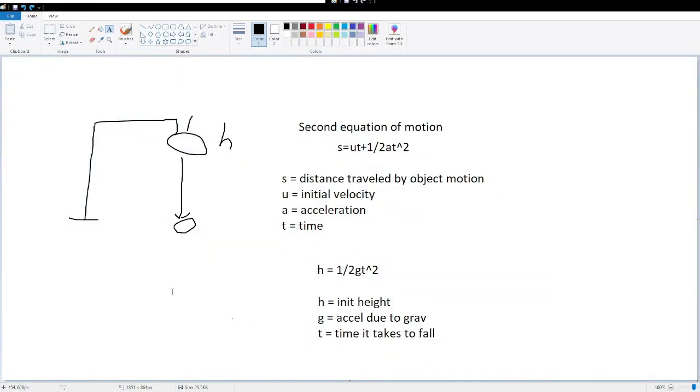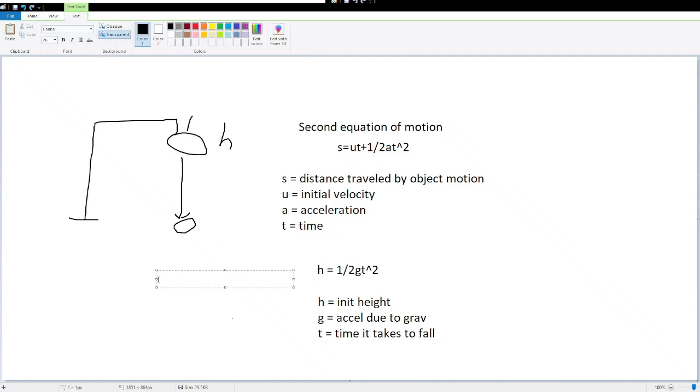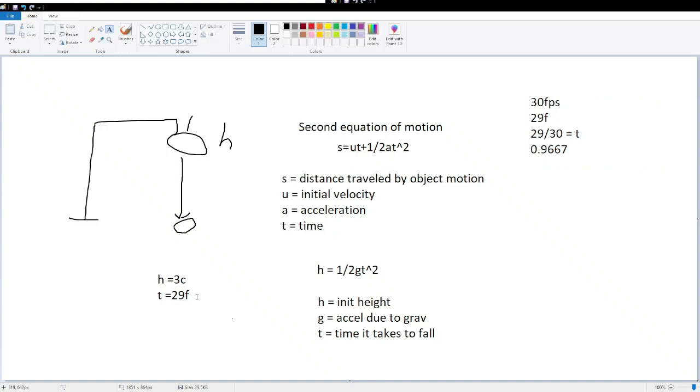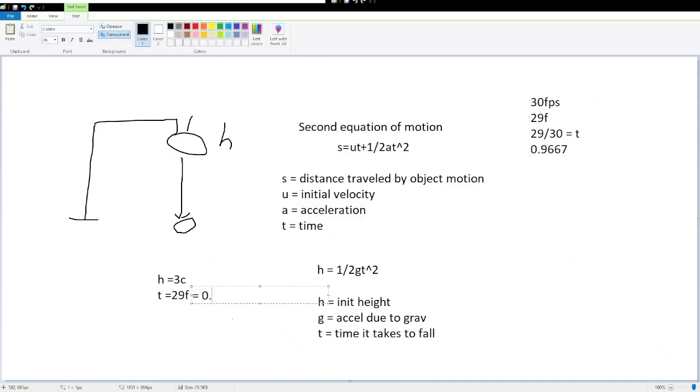Now we have our height and our time it takes to fall. Our height is 3c and our time is 29 frames. But we don't want our time in frames, we want our time in seconds. If Tears of the Kingdom runs at 30 frames per second, and it took 29 frames for our apple to fall, then we divide 29 by 30 to get our time. 29 divided by 30 is 0.9667 seconds.